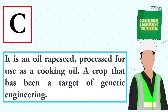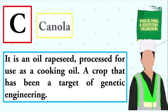It is an oil rapeseed processed for use as a cooking oil. A crop that has been a target of genetic engineering. The answer is canola.